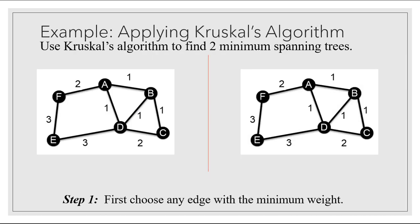A graph can have more than one minimum spanning tree. So we're going to do a second exercise using Kruskal's algorithm to find two different minimum spanning trees. I have the same graph copied — one on the left and one on the right — and we'll follow all the rules of Kruskal's algorithm, but in some cases we might make a different choice. For step one, we choose any edge with minimum weight. This graph has four edges of minimum weight — weight one. On the left I chose AB; on the right I chose AD instead.